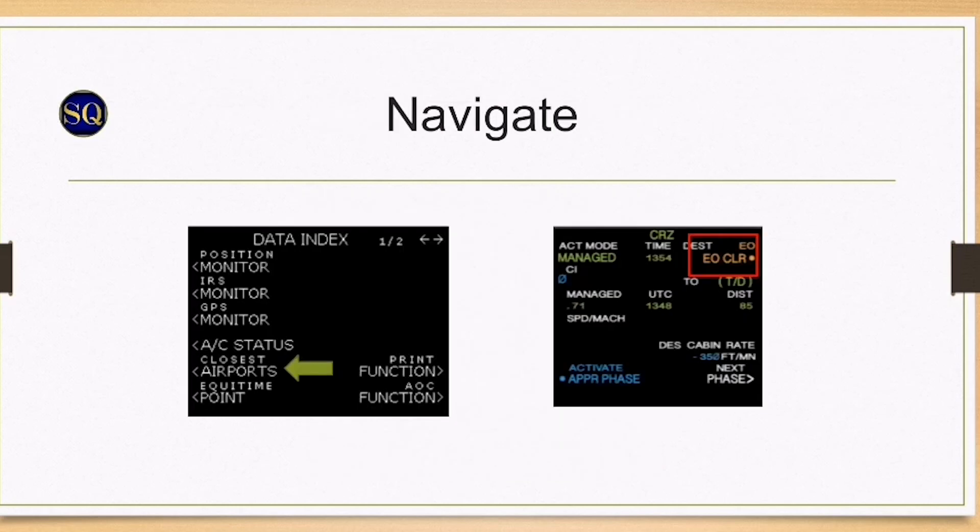Navigate. The MCDU data nearest airport can be used to select a diversion airfield. The A320 can autoland in CAT3A weather conditions with one engine inoperative. FMGS gives predictions on flight plan page when an engine out is detected down to the primary destination. Caution: pressing the engine out clear restores the two engine predictions and further engine predictions are lost for the remainder of the flight.